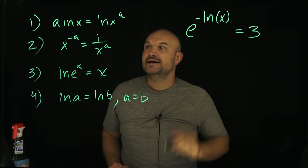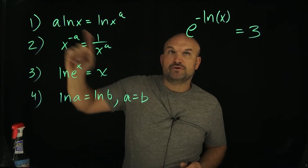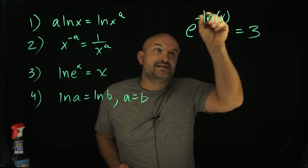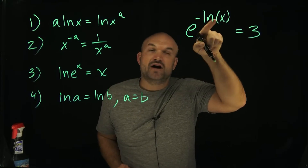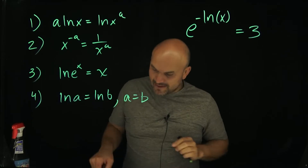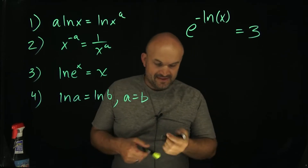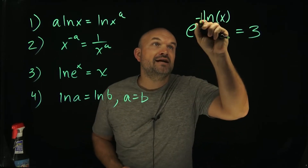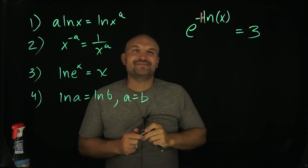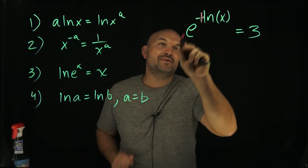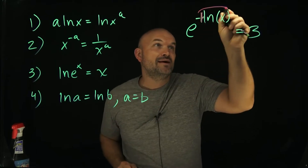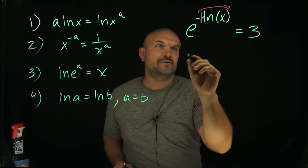The first rule is the power rule of logarithms. We don't want numbers in front of our ln. What we want to do is rewrite that coefficient as a power. This is a negative 1, so we want to rewrite it as x to the negative 1. Now I can rewrite that up top.